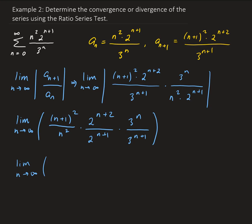Let's simplify the exponential parts. For 2 to the (n+2) over 2 to the (n+1): the numerator is 2 to the n times 2 squared, and the denominator is 2 to the n times 2 to the first. The 2 to the n cancels out, leaving us with 4 over 2, which equals 2.